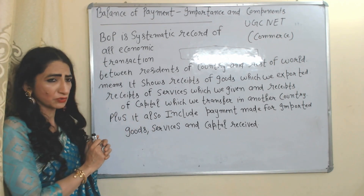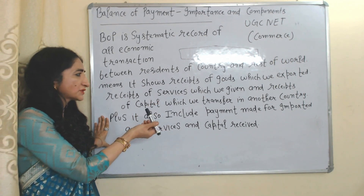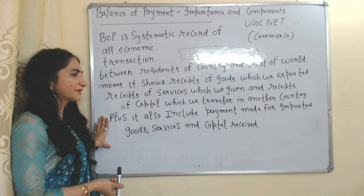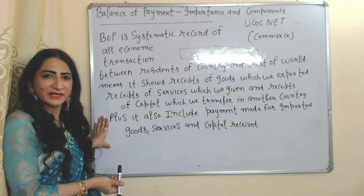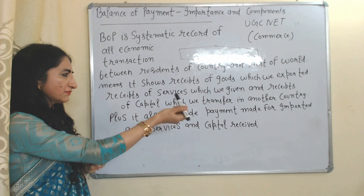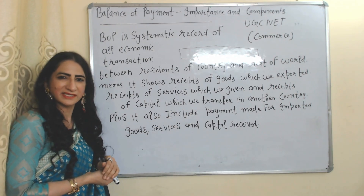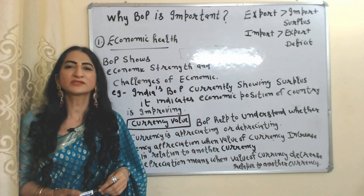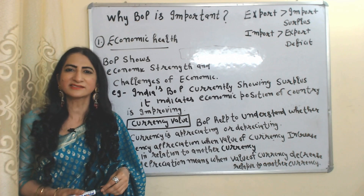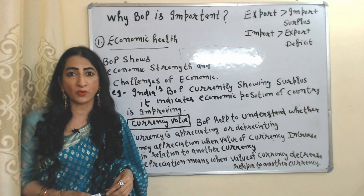Balance of Payment shows receipts of goods which we exported, receipts of services which we have given, and receipts of capital which we transferred to another country. It also includes payments made for imported goods, services, and capital received. If exports are more than imports, our Balance of Payment is in surplus.